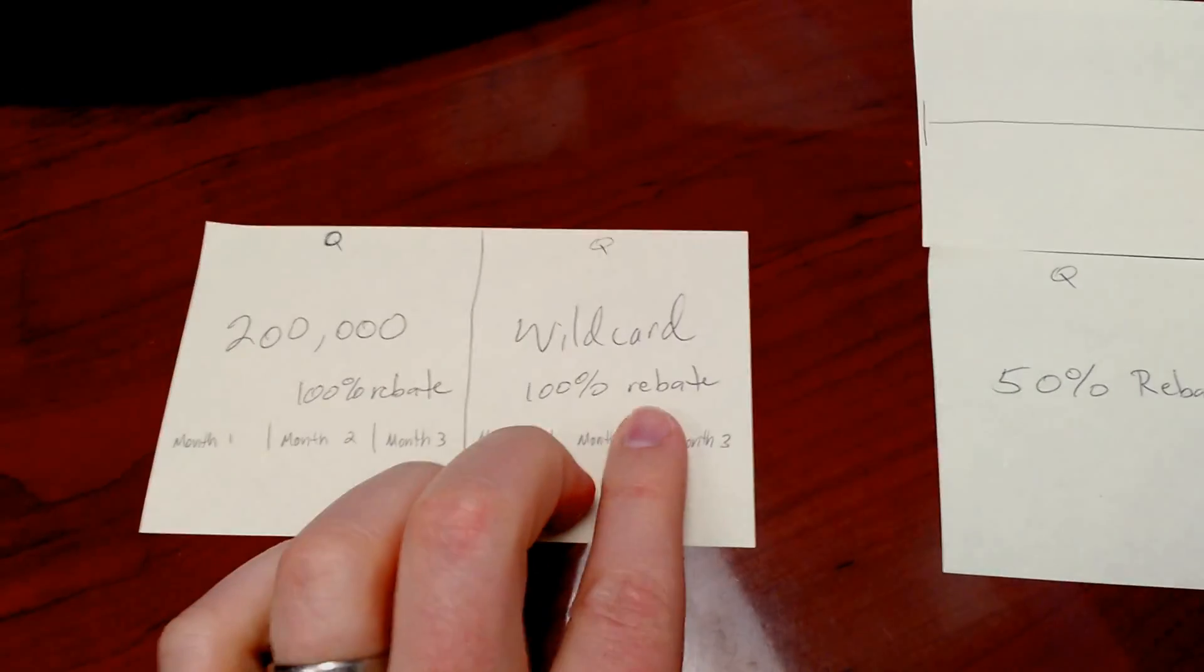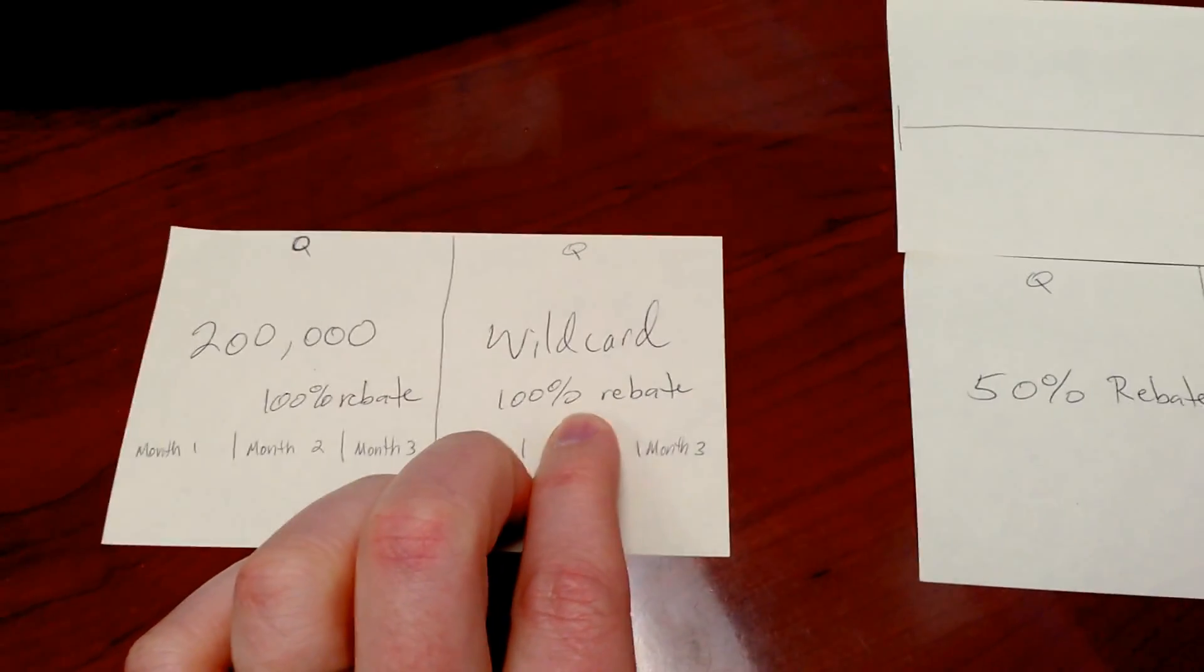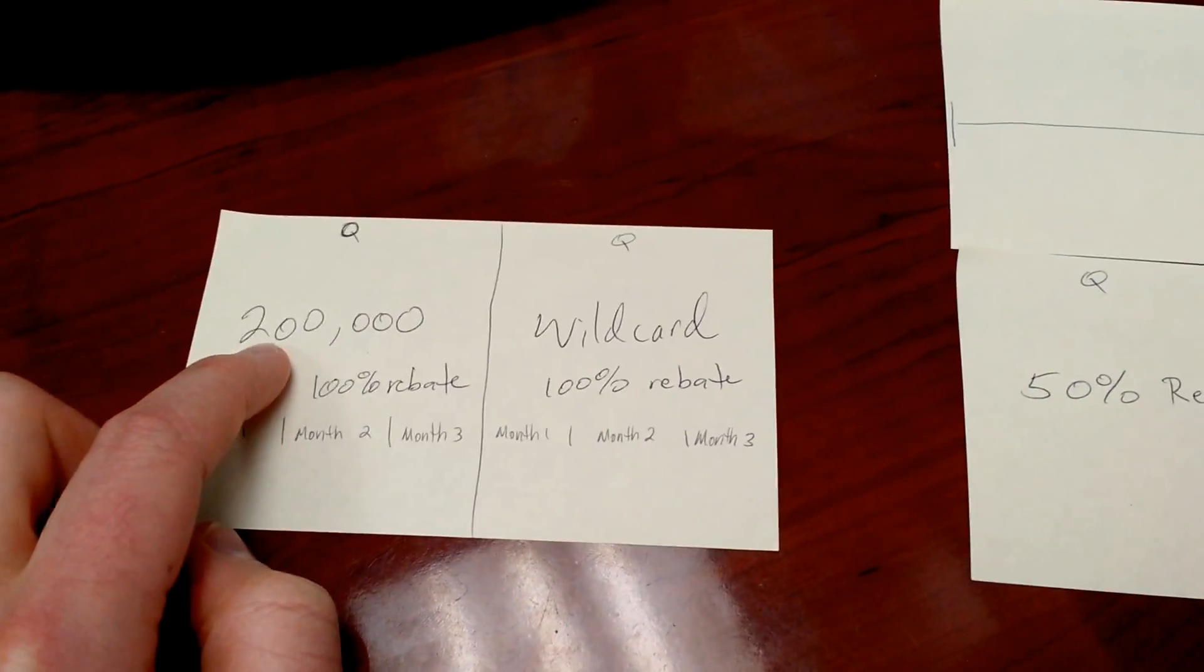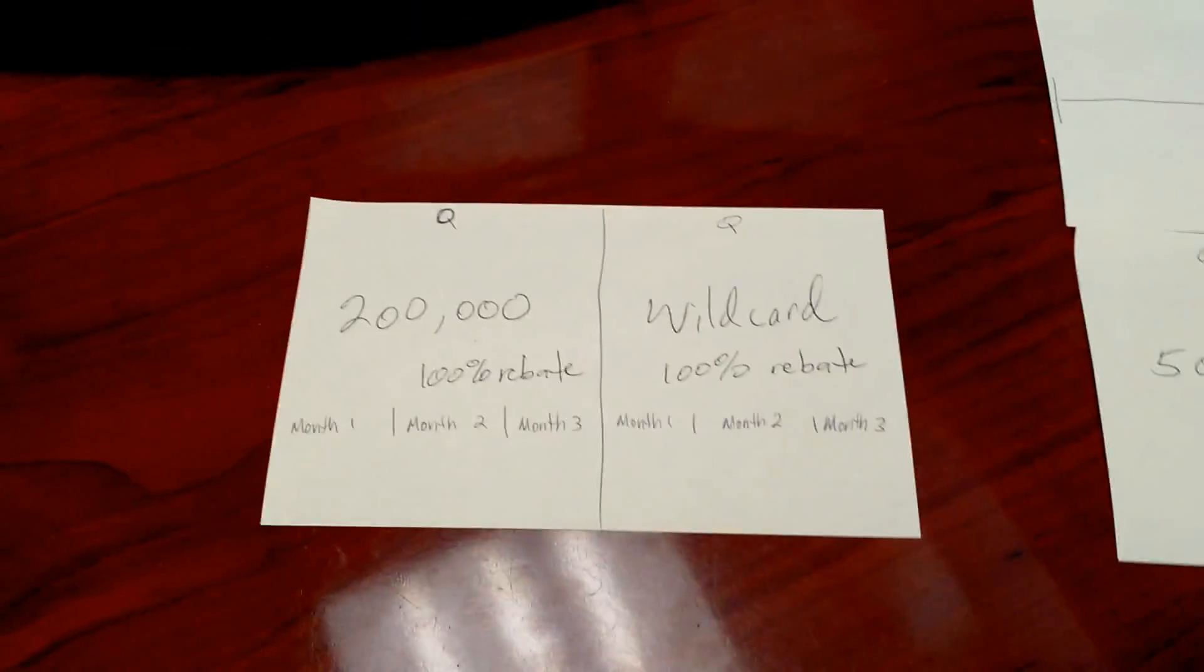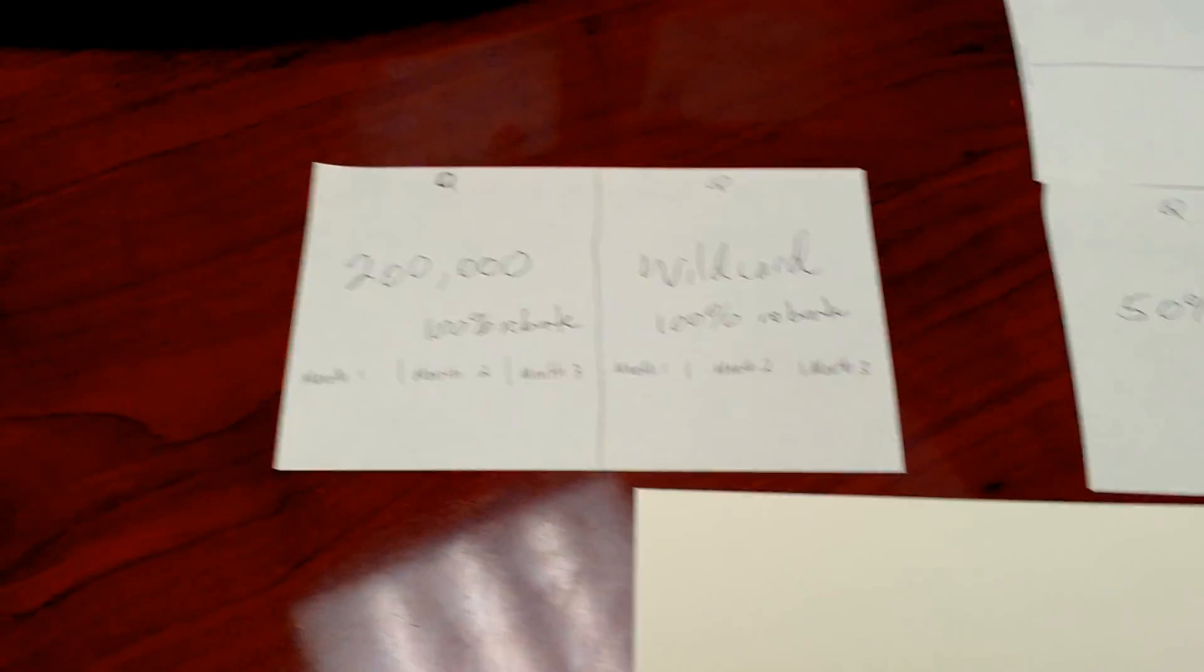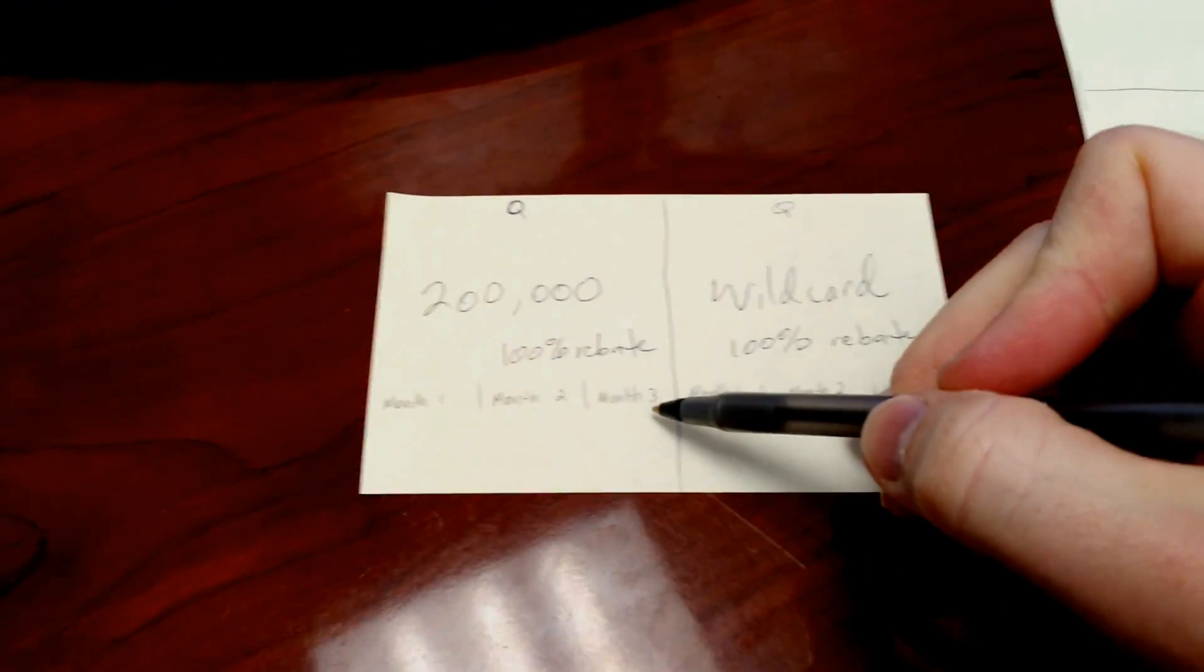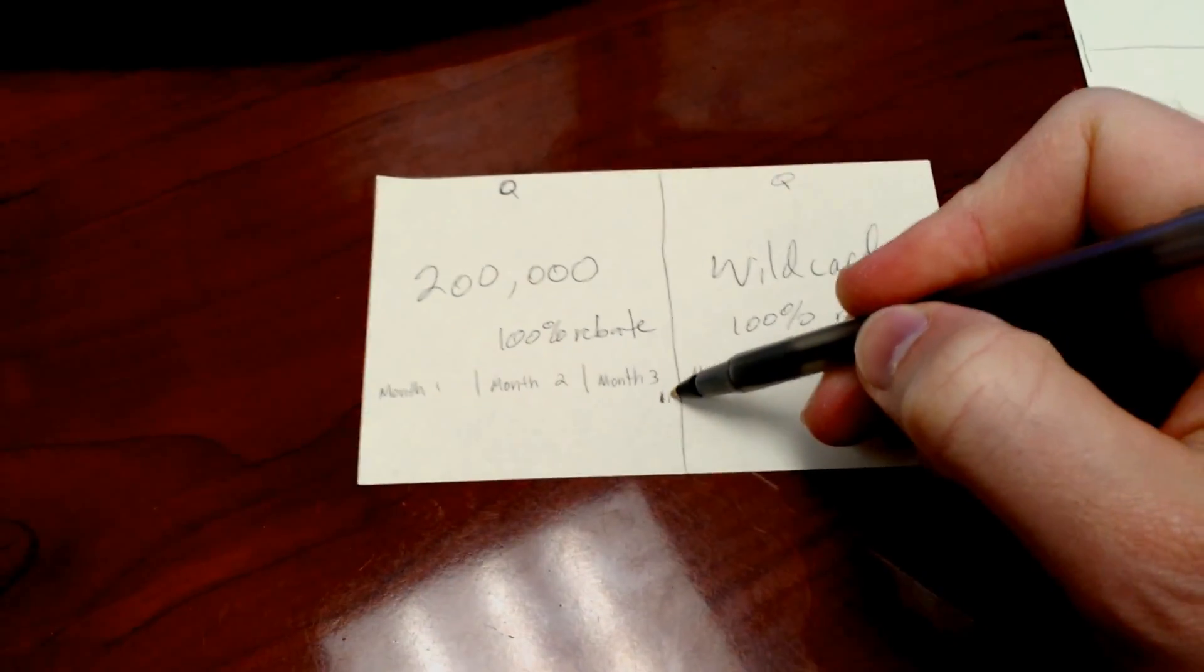That is a huge deal. If Tesla sells a hundred thousand cars during this quarter, every one of them will qualify for 100% of the federal tax rebate, even above two hundred thousand vehicles.